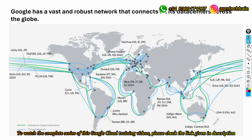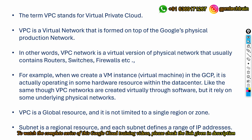They have interconnected all their data centers across the globe, providing a vast and robust network to deliver Google Cloud services. The reason we are looking at their physical network is that VPC is built on top of this physical network. So though VPC is referred to as a virtual private cloud, it is built on top of this physical network connected across the globe. VPC stands for virtual private cloud.